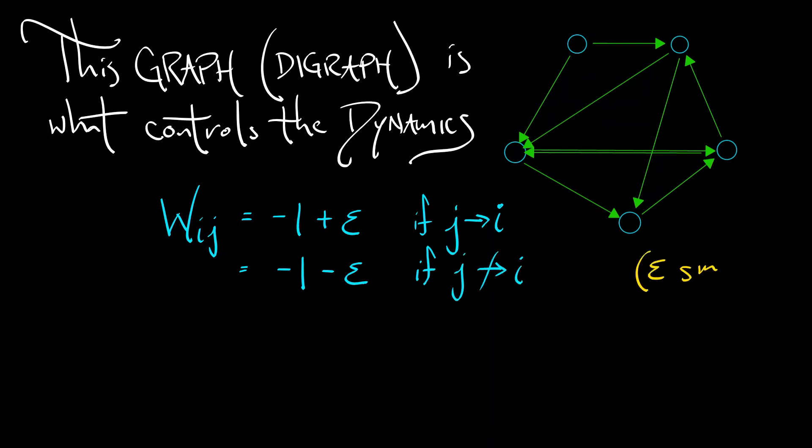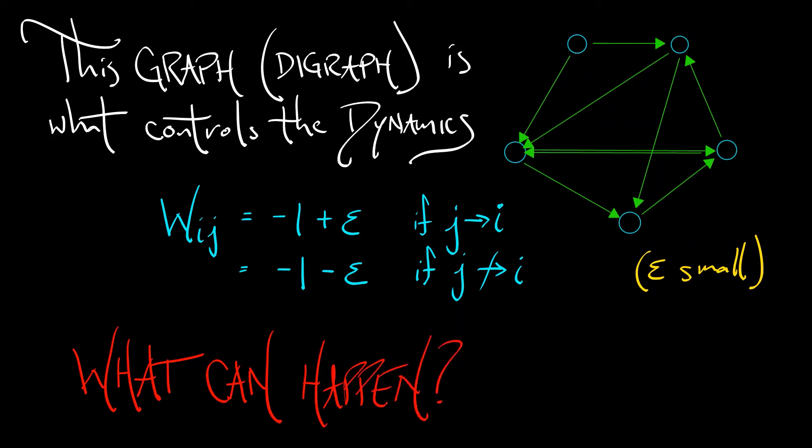Now we don't want that epsilon to be too big. Let's keep it definitely less than one. We could use a different epsilon for the addition versus subtraction, whatever. Let's keep it simple, and let's just consider what can happen as a function of the network connectivity. This is kind of an interesting problem in graph topology and how it influences the dynamics.